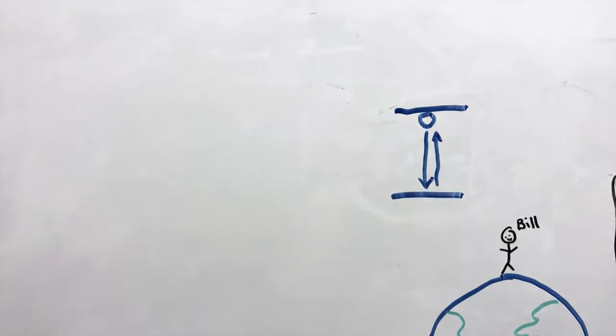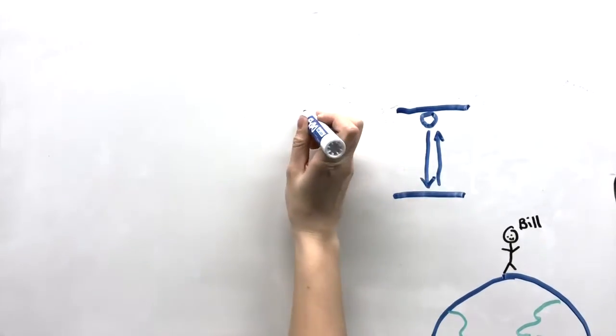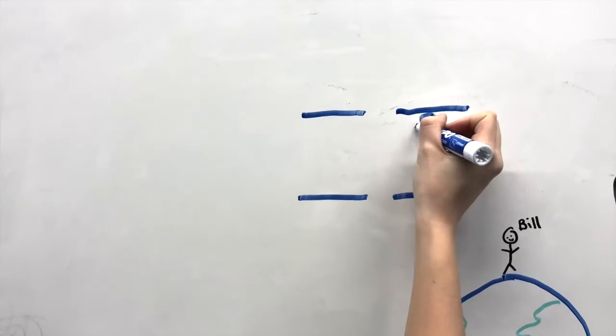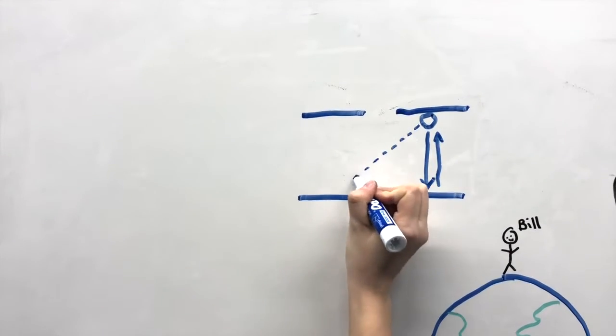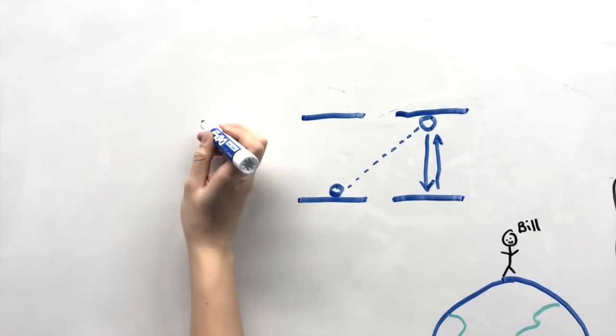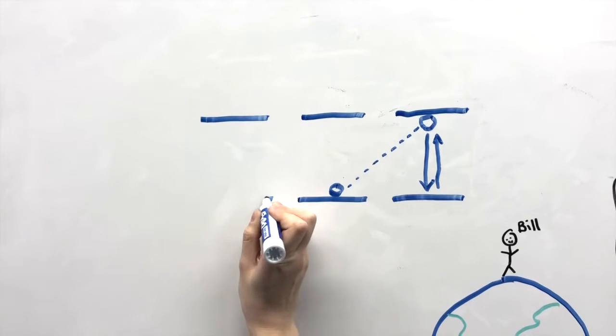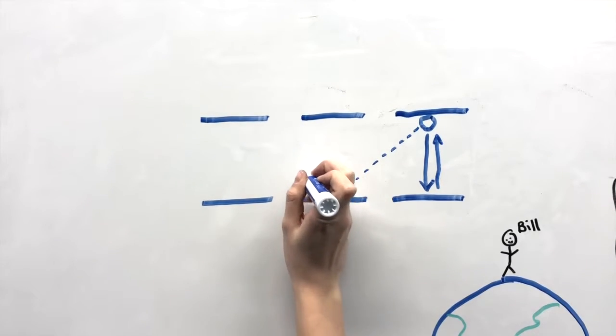Since the light clock is aboard the rocket ship, it appears to be in motion for the observer on Earth. Therefore, the light beam of the light clock seems to be moving diagonally. This would mean that the light beam would be traveling a greater distance in the eyes of the observer on Earth.